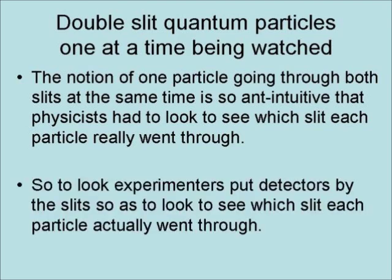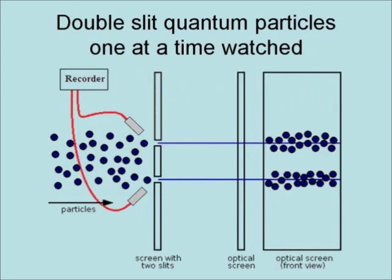So to look, experimenters put detectors by the slits to see which slit each particle actually went through. The results were that subatomic particles formed a spray line behind each slit, just like classical particles would. This suggests that the electrons somehow knew that they were being watched. And this is not the end of the strangeness, because it's about to get even stranger.